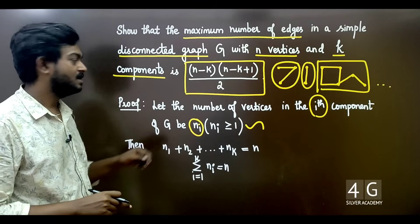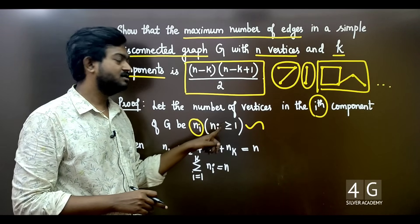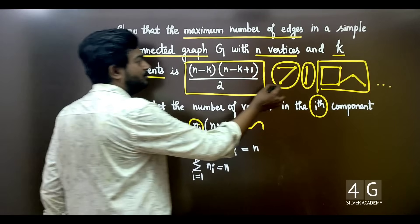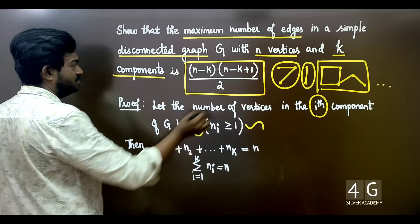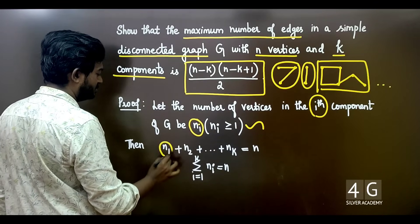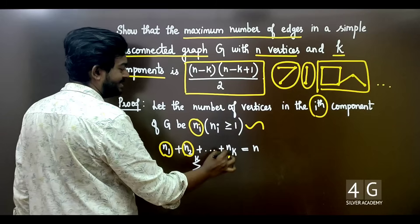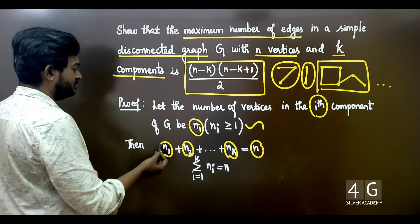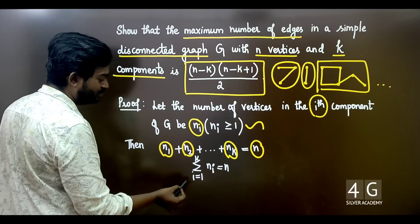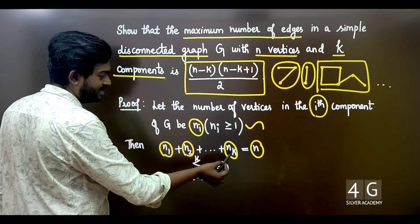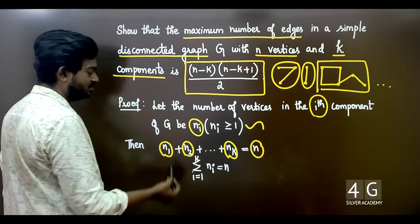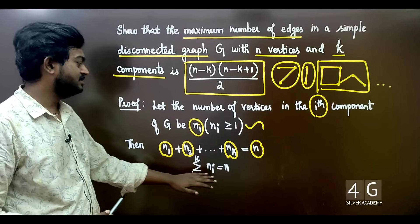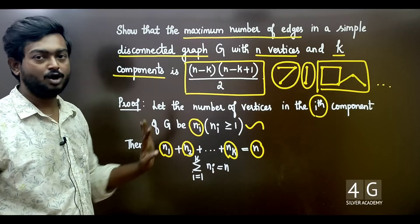In the i-th component there are ni vertices. The total: first component has n1, second component has n2, up to nk. The summation from i=1 to k of ni equals n. This is the general concept — components to vertices.